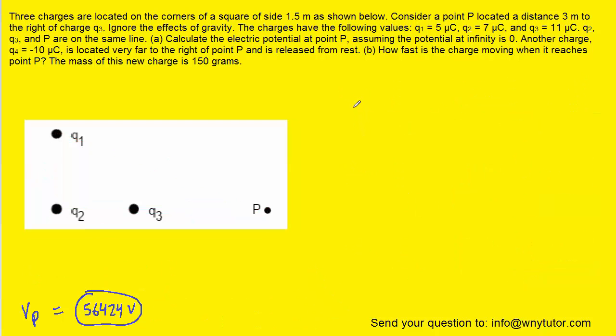Now, to answer part B, we need to begin by first recalling the following fact. The change in electric potential will equal the change in potential energy divided by whatever charge is being moved. We can multiply both sides of this equation by Q to solve for the change in potential energy.